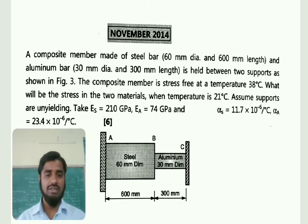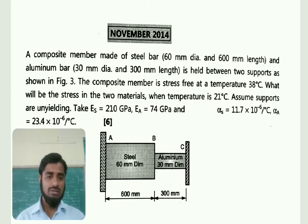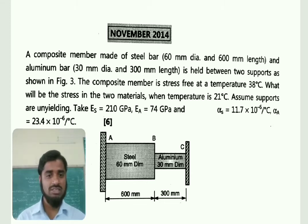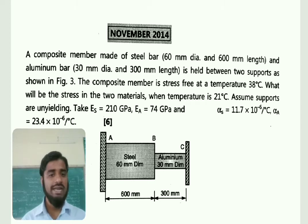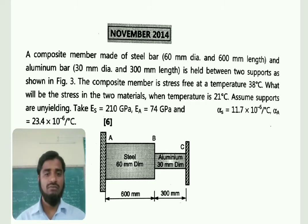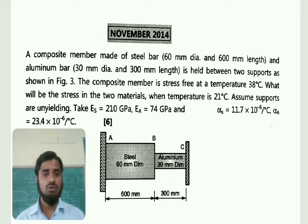What will be the stress in the two materials when temperature is 21 degrees centigrade? The initial temperature is 38 degrees centigrade and we are asked about the stresses when the temperature is 21 degrees centigrade. Assume supports are unyielding — the supports are fixed.